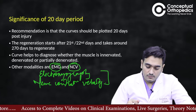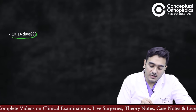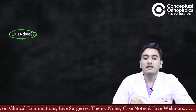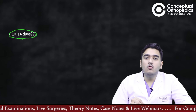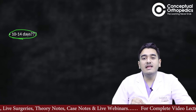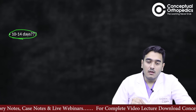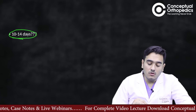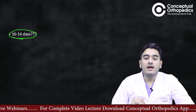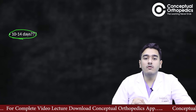Should you do the test at 10 to 14 days? The answer is no. Wallerian degeneration may be occurring around that time, so even though you may get some responses, they may not be correct. Hence, testing at 10-14 days is not recommended, though it is better than doing it in the first week.